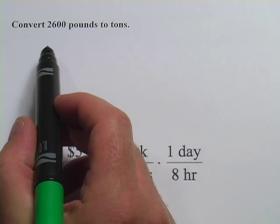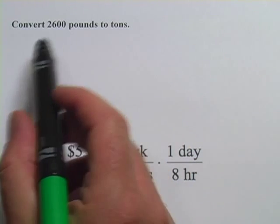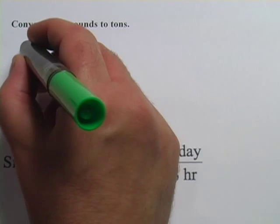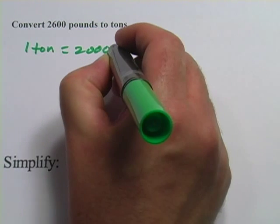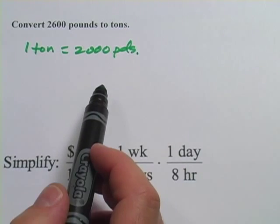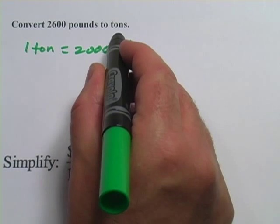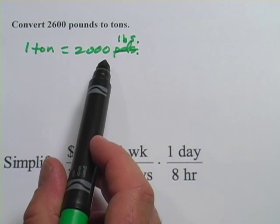This first one says convert 2,600 pounds to tons. If you went to the internet and looked up how many pounds in a ton, you would find out that one ton equals 2,000 pounds. Actually I guess they abbreviate that LBS. So one ton equals 2,000 pounds.